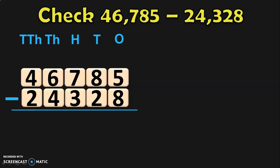In ones place we have 5 minus 8. We know that 8 is greater than 5, so we cannot do this subtraction directly. We move on to the tens place and borrow from the tens place, or we regroup the tens place. In tens place we have 8 tens, so when you regroup 8 tens it will become 7 tens, and that 1 ten will be taken to the ones place. In ones place you already have 5 ones; 5 ones plus 10 ones will give you 15 ones. So now in ones place you have 15 ones — we can subtract 15 minus 8, which gives you 7.